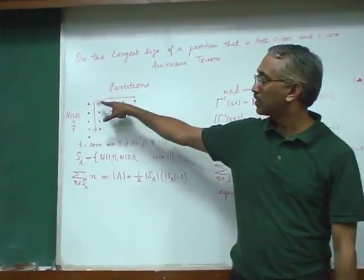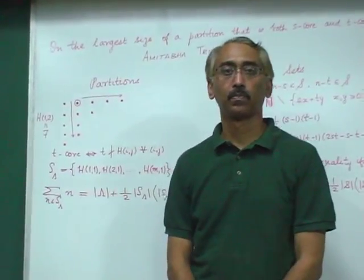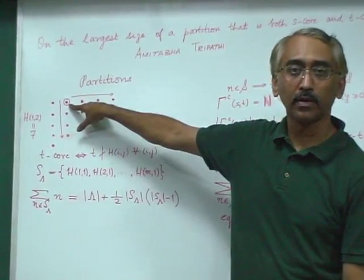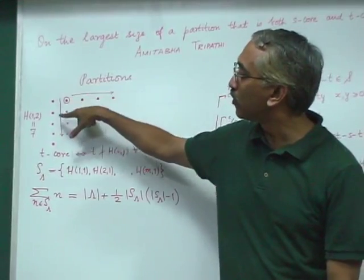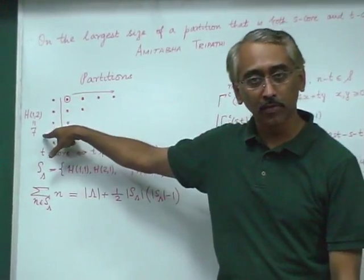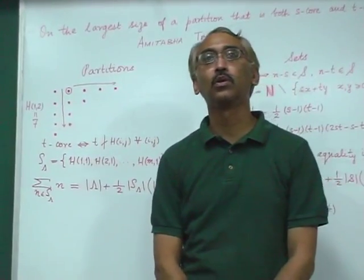Let's look at a partition and a graphical representation of it. Consider for instance the cell outlined there and look at the hook generated by that cell. The length of that hook, which is 7 in this case, is called its hook number.